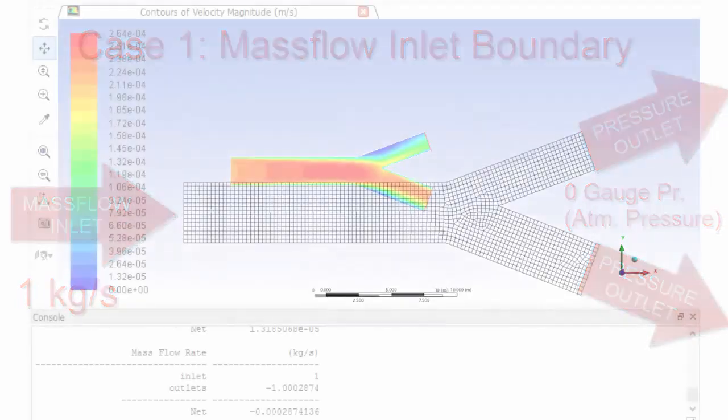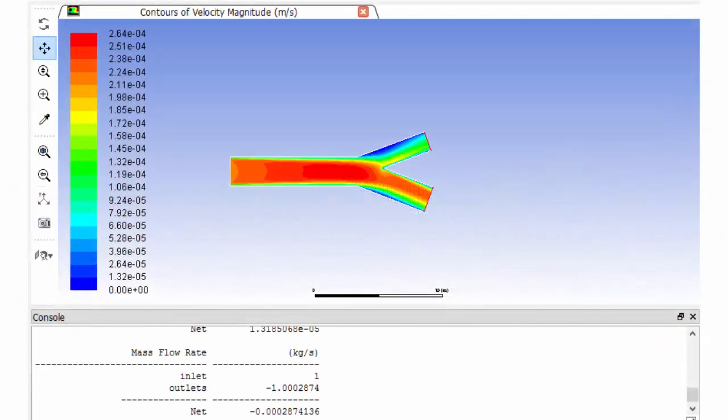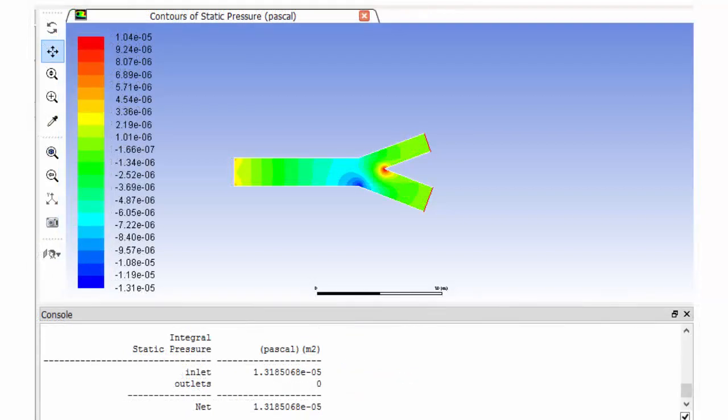Let us see the results. As we defined, the mass flow rate at the inlet is maintained at 1 kg per second. The corresponding pressure at the inlet is computed as 1.3 × 10⁻⁵ Pascals.